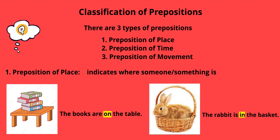The first one is preposition of place. It indicates where someone or something is. In the first picture you can see some books on the table. The books are on the table, so 'on' is the preposition — it is telling us where the books are. In the second picture you can see a rabbit in a basket. The rabbit is in the basket, so 'in' is the preposition telling us where the rabbit is.